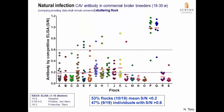This data shows breeder flocks in Arkansas, from several different flocks labeled A to S. We took samples from about 20 to 30 chickens per flock and tested by ELISA using an IDEX kit, with a 1 in 10 dilution. This is a competitive ELISA, so values over 0.6 are considered negative, values below 0.2 are considered protective titers, and everything in between is positive.